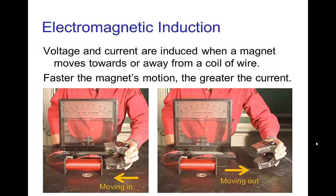Now, another connection between electricity and magnetism is electromagnetic induction. I can use this Lorentz force on charges, and if I have a magnet that's moving towards a coil, that will actually move the charges in the coil and produce a current. When I'm moving the large horseshoe magnet towards this coil, the charges move in one direction — I have a current in one direction.